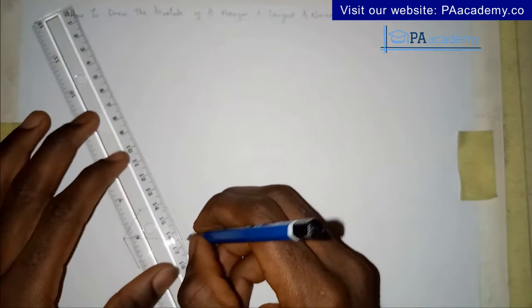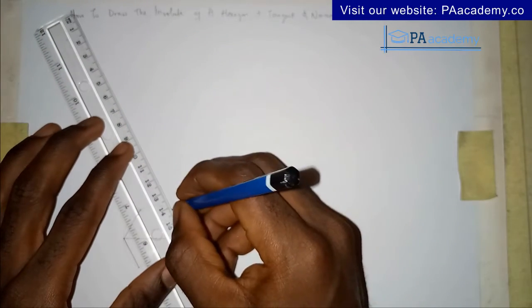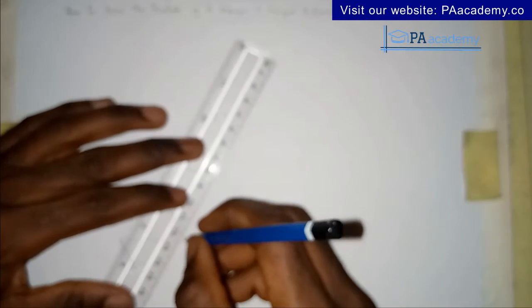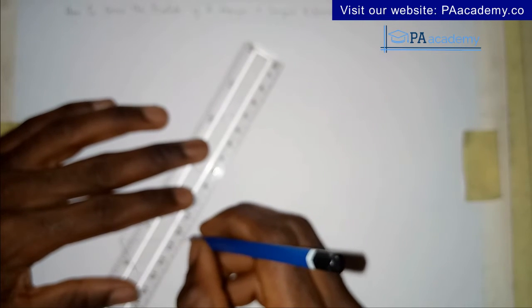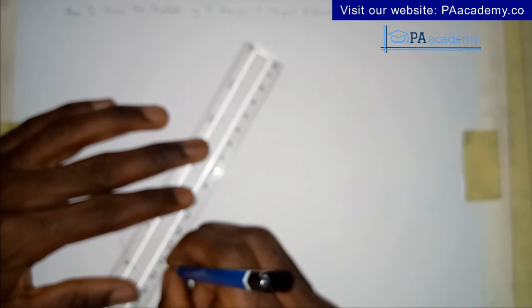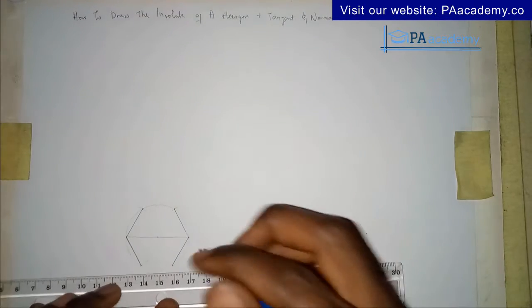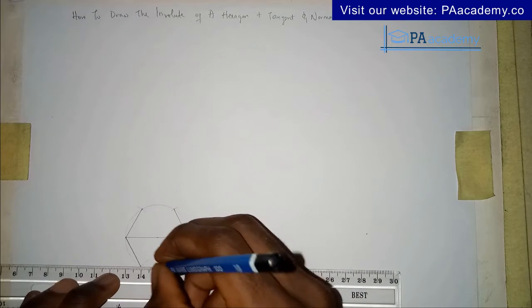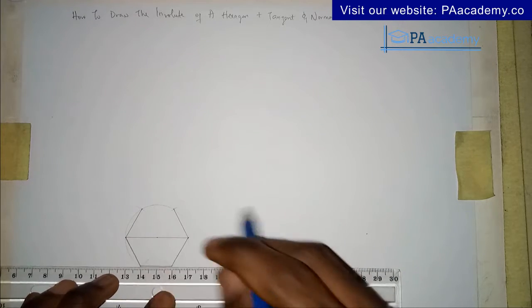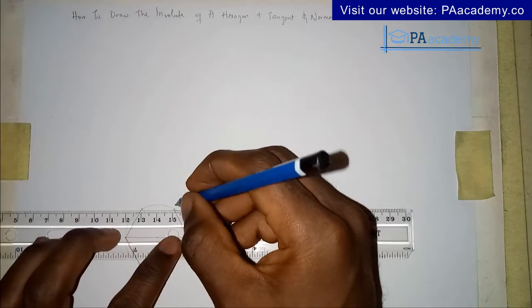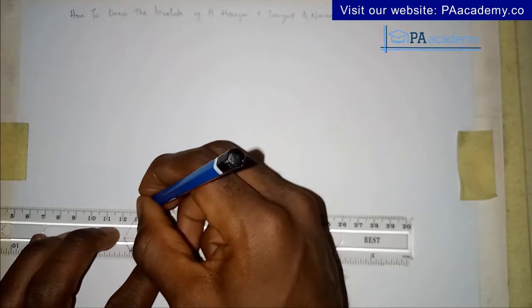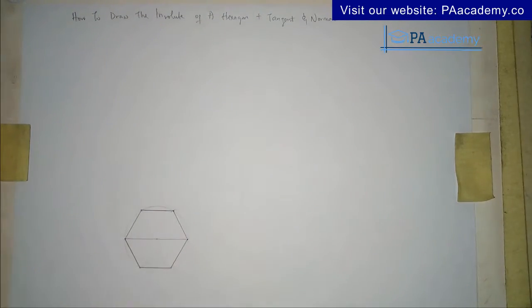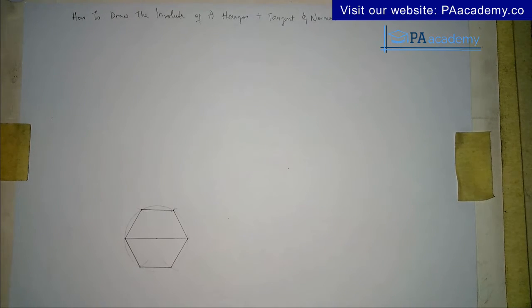Using this method to draw your hexagon shouldn't require a protractor — just your compass is enough. The hexagon itself is drawn with a bold outline, while the circle and arcs use faint lines. Now we already have the hexagon.